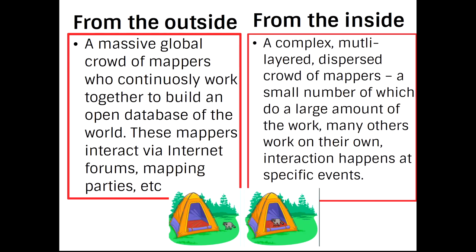From the outside of OSM, if you're not really familiar with the project, you might think that OSM is a global, massively large crowd of mappers who work continuously together to build an open database of the world, interacting via forums, mapping parties, et cetera. But in reality, from the inside, OSM is a complex, multi-layered, dispersed crowd of mappers. It's certainly a massive crowd. There's a large amount of work done by a small number of contributors. Many people work on their own, and interaction happens at specific events, and mapping is caused by certain events and performed in different manners.